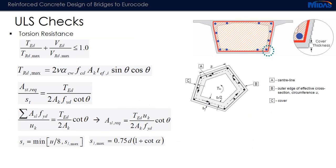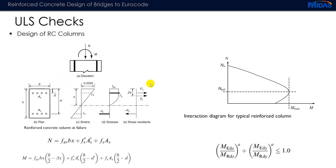Torsion resistance checks are not done by the software for column sections, but these are straightforward checks which can be done using Excel sheets when needed. Reinforced concrete columns are designed in the software using a moment interaction curve — axial force and moment interaction diagrams — where both steel in compression and tension zones are considered. For uniaxial bending a specific equation is used; for biaxial bending, a biaxial moment interaction diagram is employed.